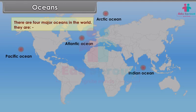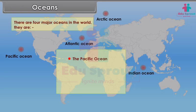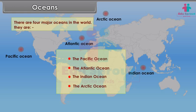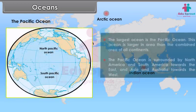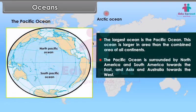There are four major oceans in the world — the Pacific Ocean, the Atlantic Ocean, the Indian Ocean, and the Arctic Ocean. The largest ocean is the Pacific Ocean, which is larger in area than the combined area of all continents. The Pacific Ocean is surrounded by North America and South America towards the east, and Asia and Australia towards the west.